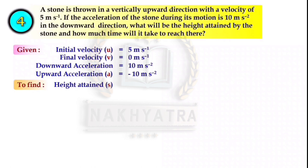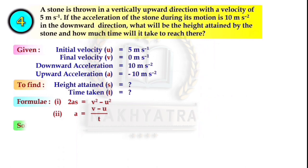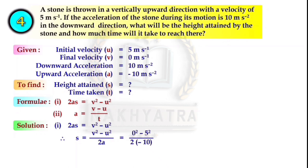We have to find the height attained (displacement S) and the time taken. For height, we use 2aS = v² - u², rearranged as S = (v² - u²)/(2a). Putting values: S = (0² - 5²)/(2 × -10) = -25/-20 = 1.25 meter. So the height attained is 1.25 meter.